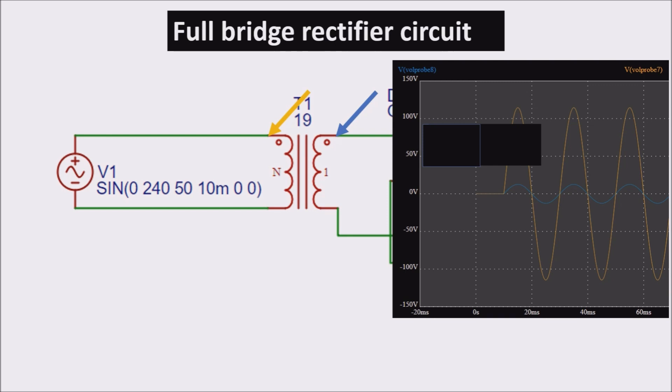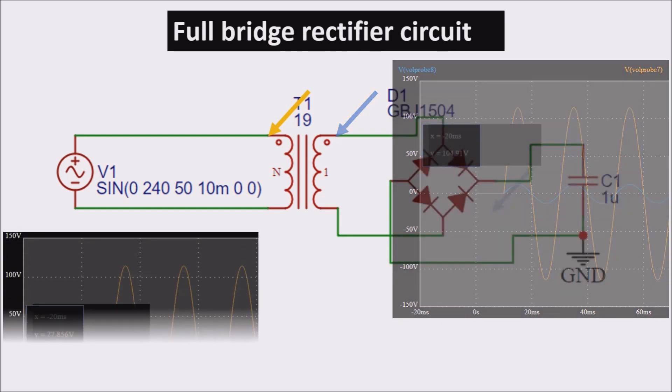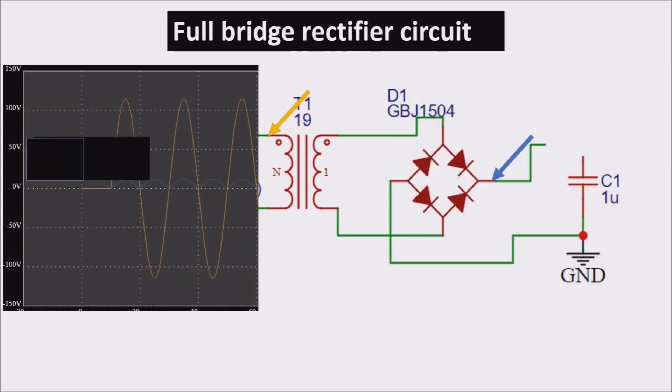Adding the diode bridge, we have at the output this blue line always positive, where the yellow line is the sinusoidal input.